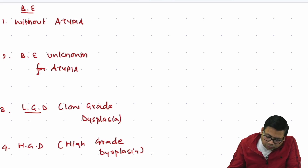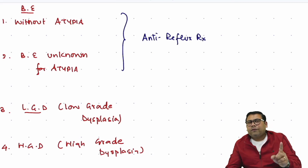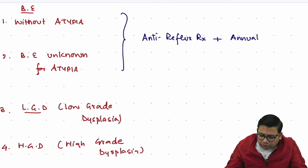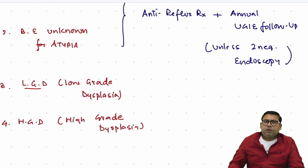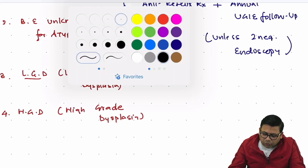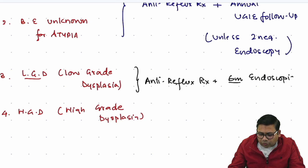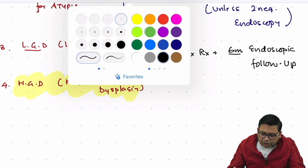For Barrett's esophagus without atypia or unknown for atypia: management is anti-reflux therapy with long-term PPIs, plus annual upper GI endoscopic follow-up unless two consecutive negative endoscopies are obtained. For low grade dysplasia: management is anti-reflux therapy plus six-monthly endoscopic follow-up — this is very important.